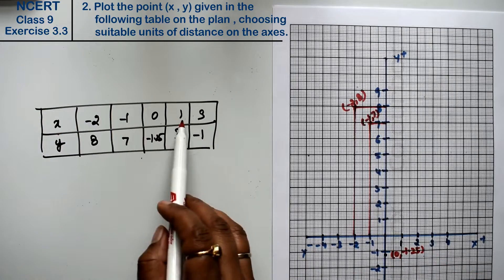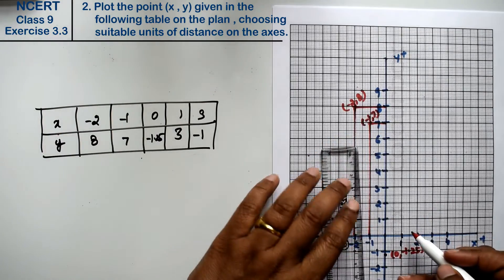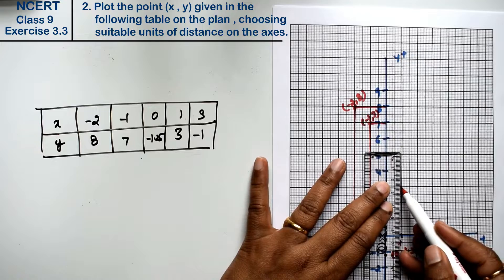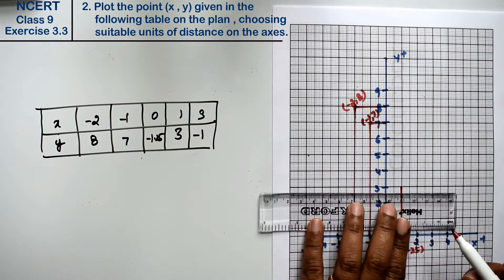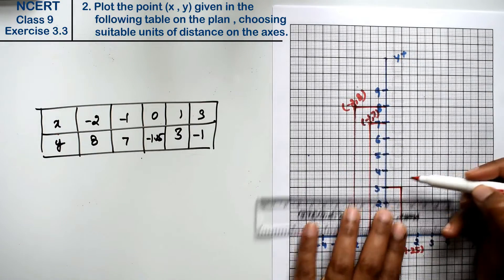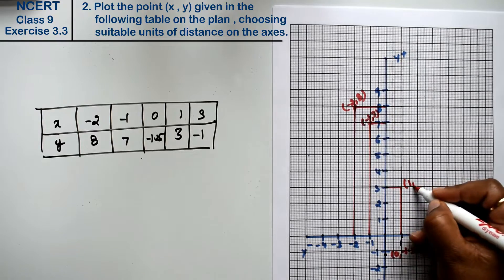Now next is x 1 and y 3. x 1, 3 we will go, and y 3. Right friends, so here it is. 1 and 3.